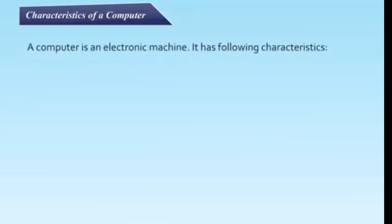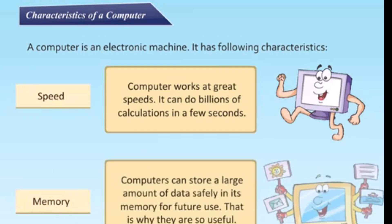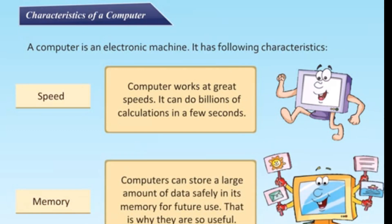A computer is an electronic machine. It means it has following characteristics. Speed: computer works at great speeds. It can do billions of calculations in a few seconds. Memory: computers can store a large amount of data safely in its memory for future use. That is why they are so useful.